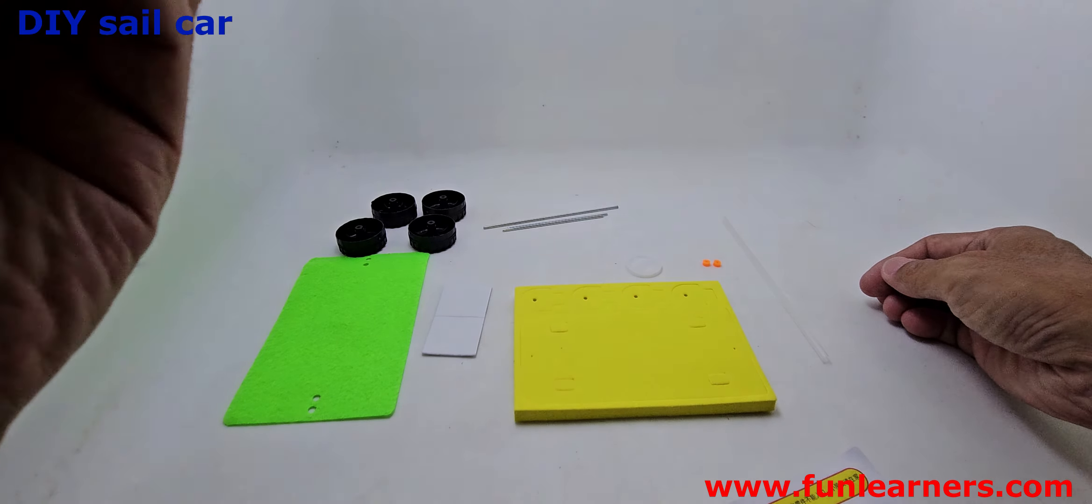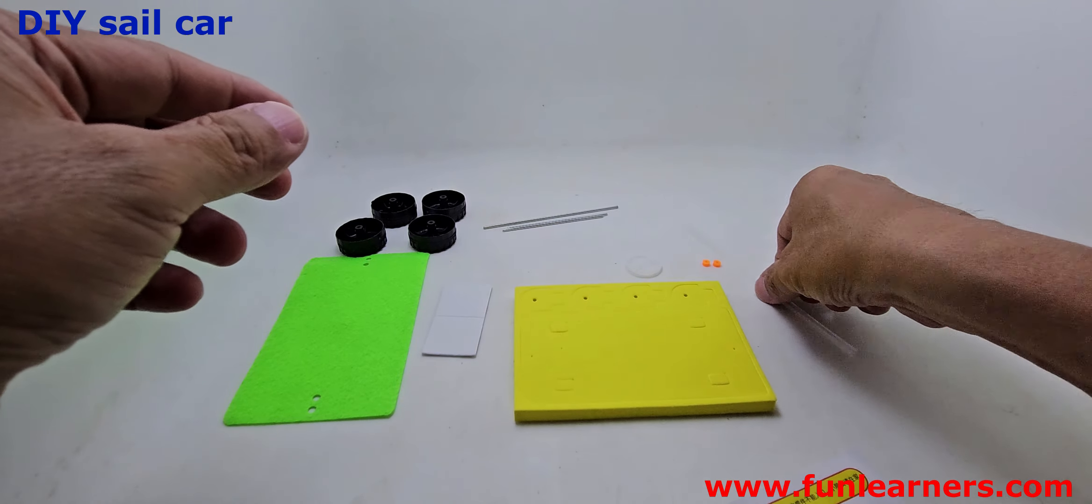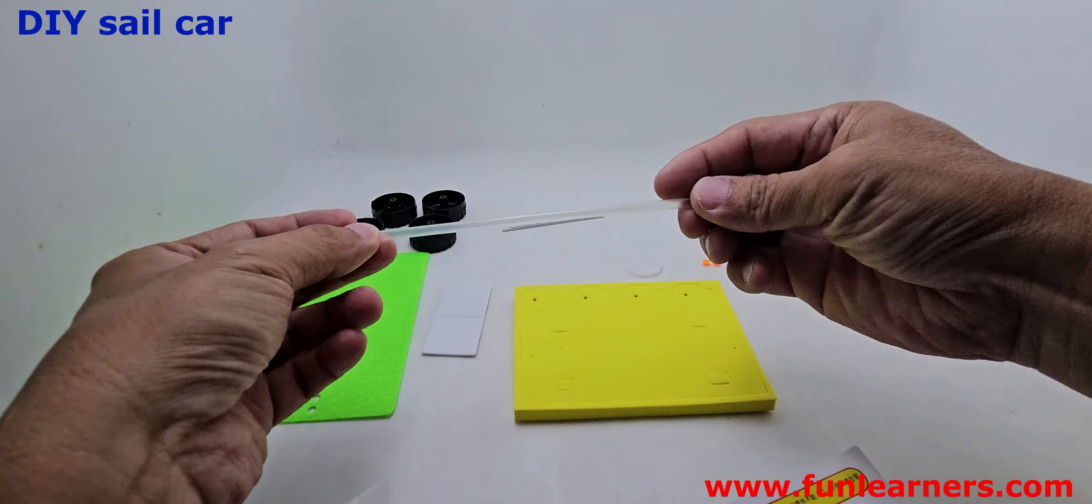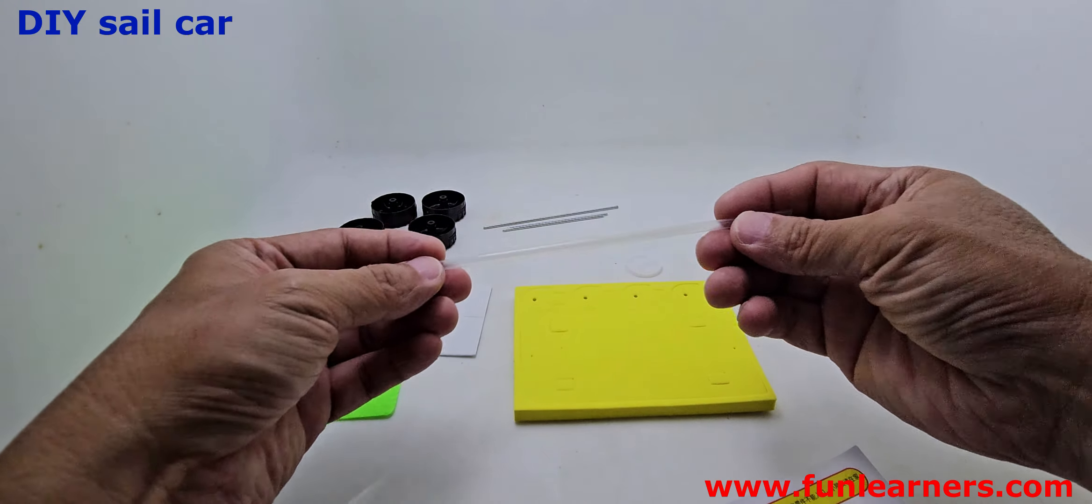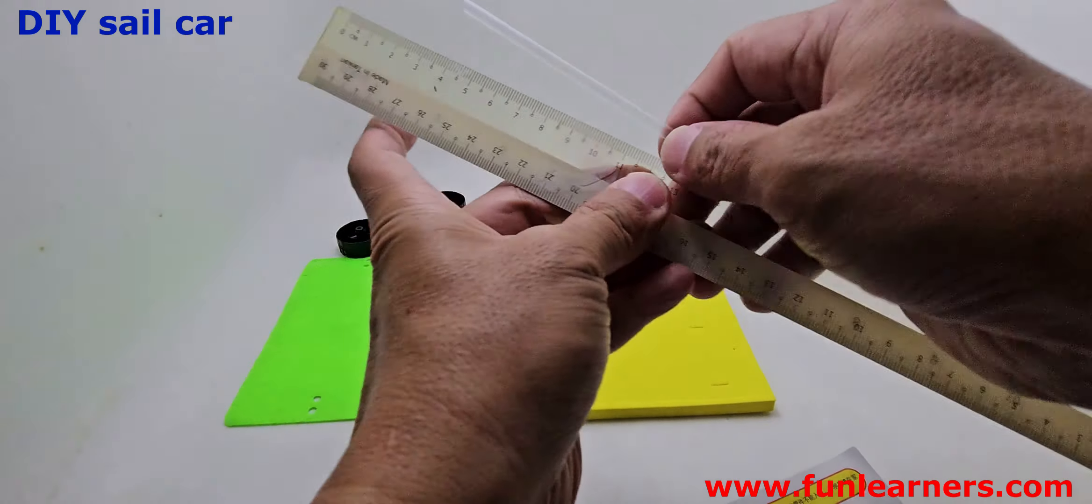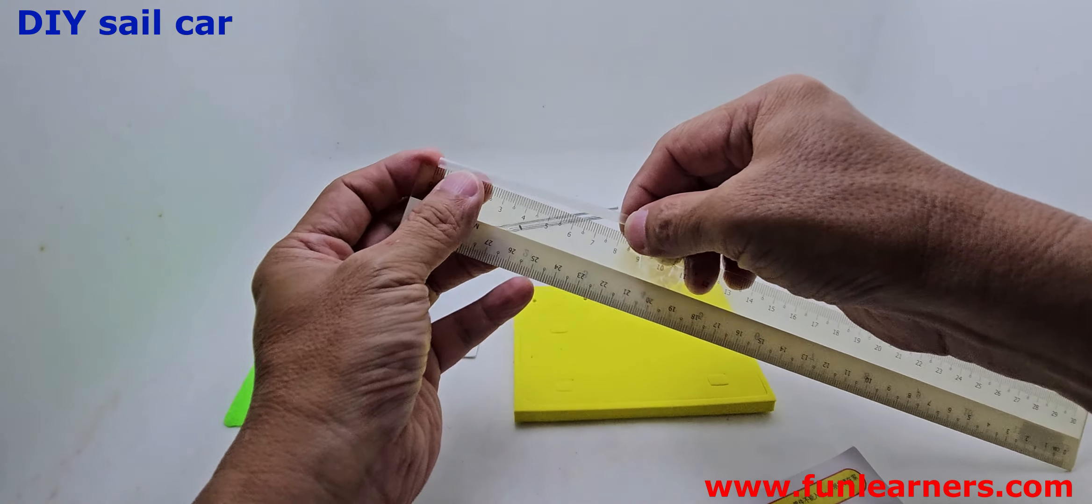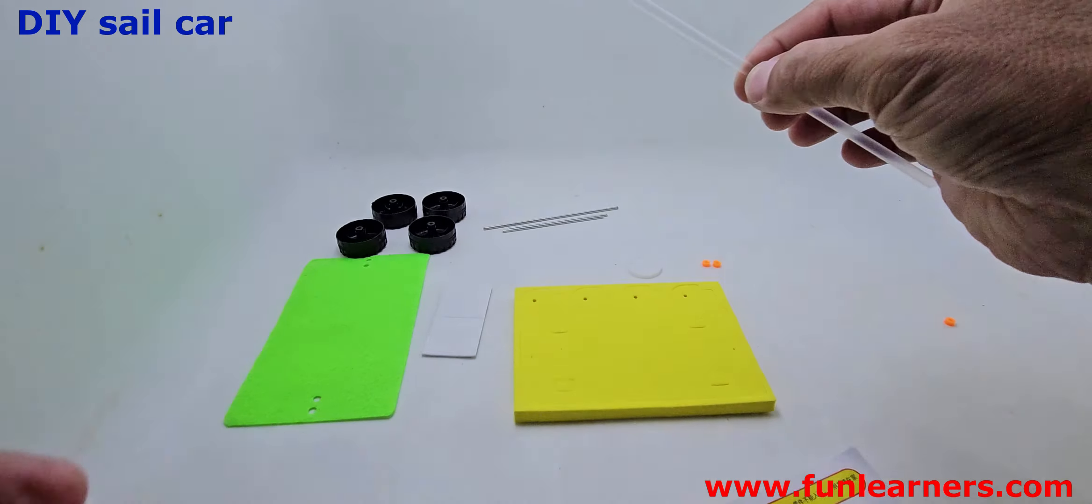Okay, let's DIY a sail car. So firstly, we have this set where we're given a plastic tube. Here we're supposed to cut about 6.5 cm off, so take a ruler, measure approximately 6.5 cm, then just cut it out.